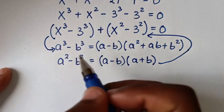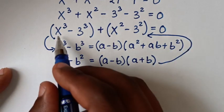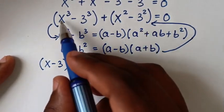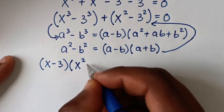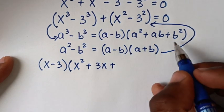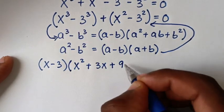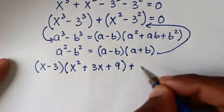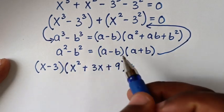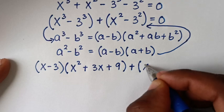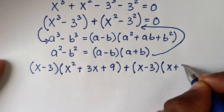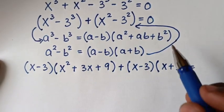So from here, we'll apply the first rule to this part, and from this part here, we'll apply the second rule. Applying the first rule: a minus b gives x minus 3, so it will be x minus 3 bracket, then a squared gives x squared, plus ab gives 3x, plus b squared gives 3 squared which is 9, bracket. Then plus, applying the second rule: a minus b gives x minus 3 bracket, times a plus b gives x plus 3 bracket, is equal to 0.